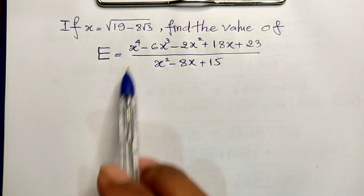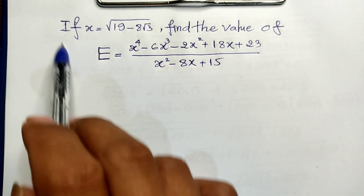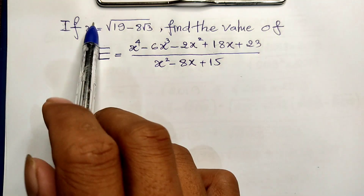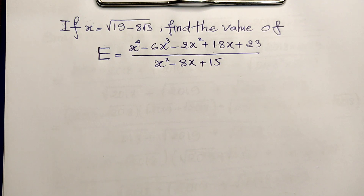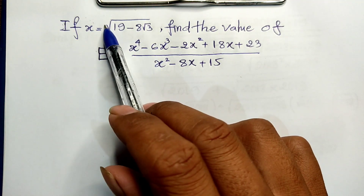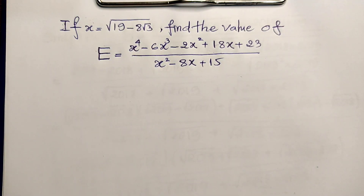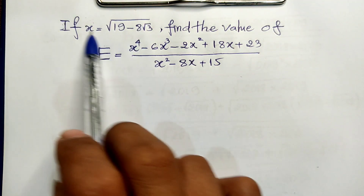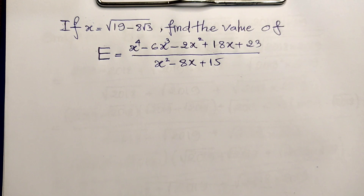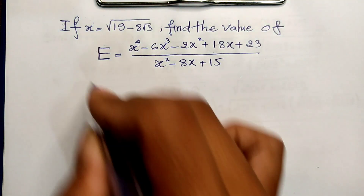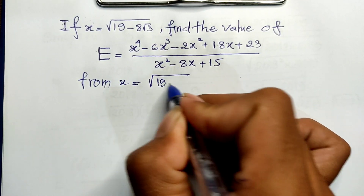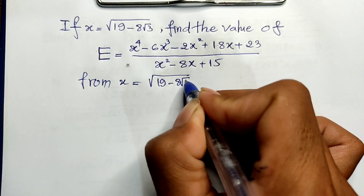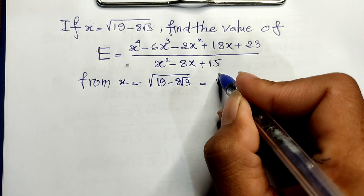To find the value of this expression, I use the value of x. But if we just replace it directly, we cannot easily find the value because it involves square roots. So now I simplify the value of x to an easier number. From x equals square root of 19 minus 8 square root of 3.